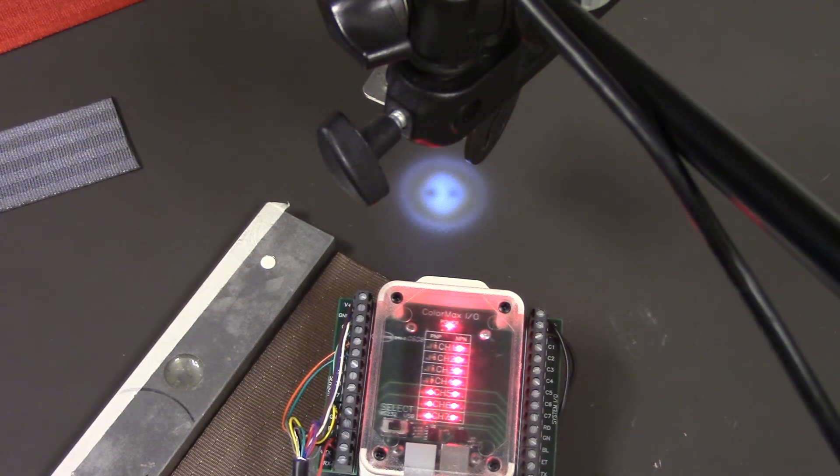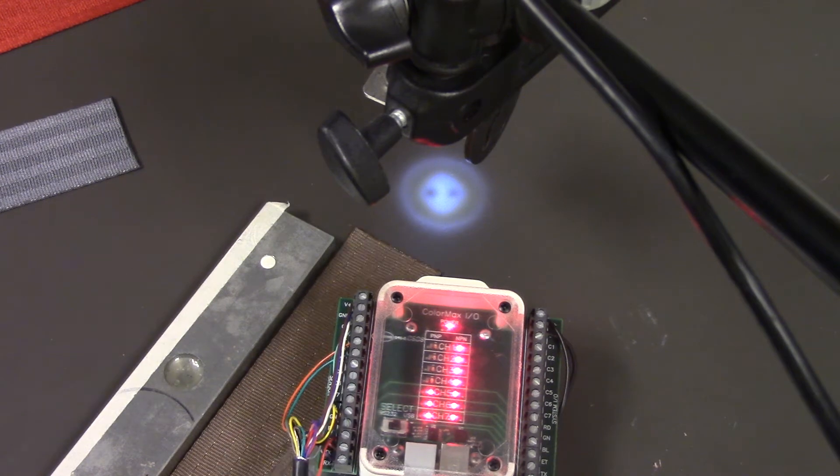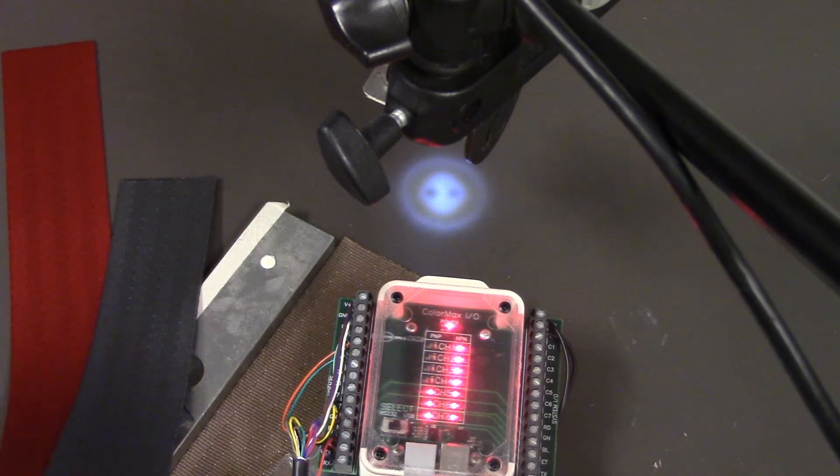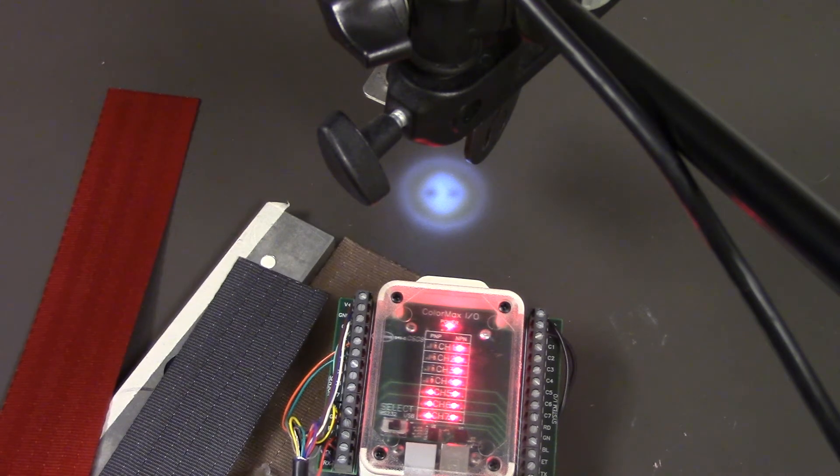This is a demonstration of the ColorMax color sensor from EMX. We program the sensor to recognize three samples of seat belt materials.